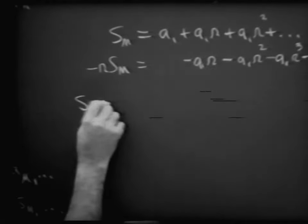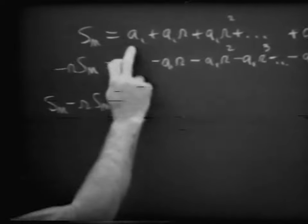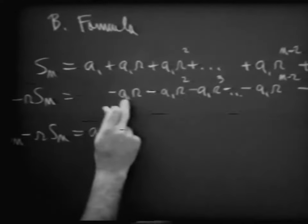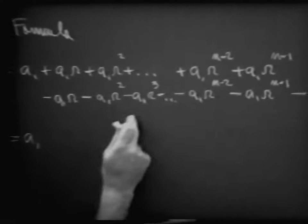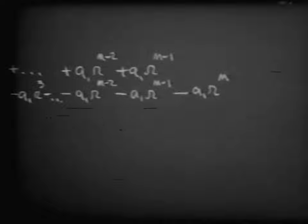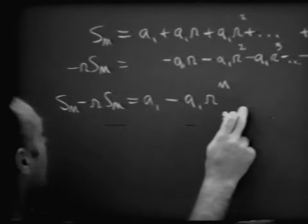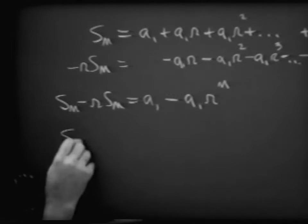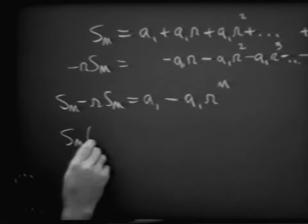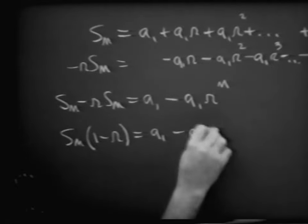Adding both sides, on the left we have S sub n minus R times S sub n. On the right, we get A sub 1, then all middle terms cancel to zero, leaving minus A sub 1 times R to the n. Factoring out S sub n on the left using the distributive property: S sub n times (1 minus R) equals A sub 1 minus A sub 1 times R to the n.